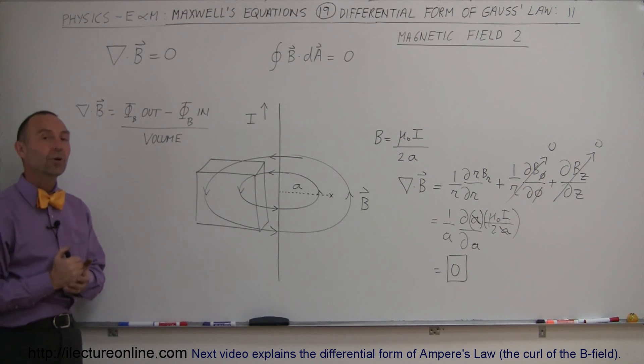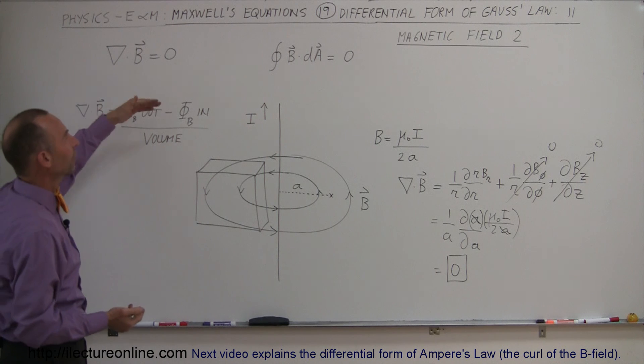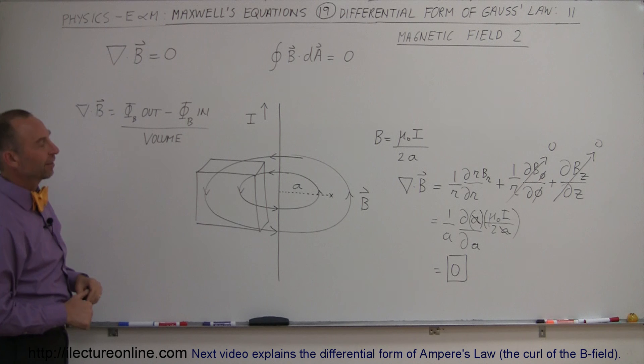So a couple of quick examples where you can see that there's a perfect match between the differential form of Gauss's law for magnetism and the integral form for Gauss's law for magnetism.